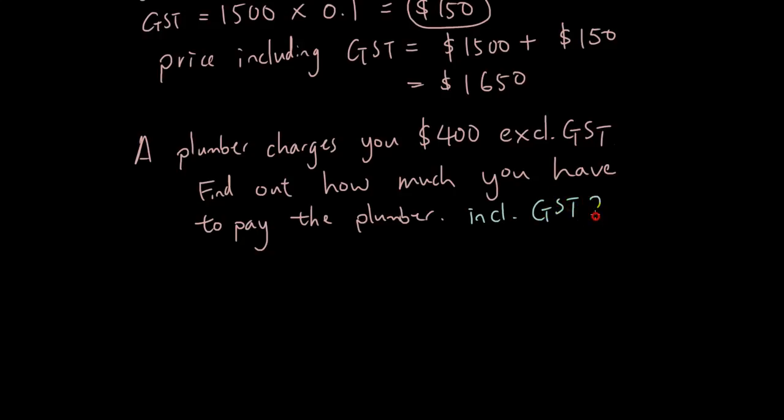Now you would go 400 times 0.1 and you'll work out that it's $40 and you'd go 400 plus 40 which is $440, the price including GST. And that's how much you have to pay the plumber.